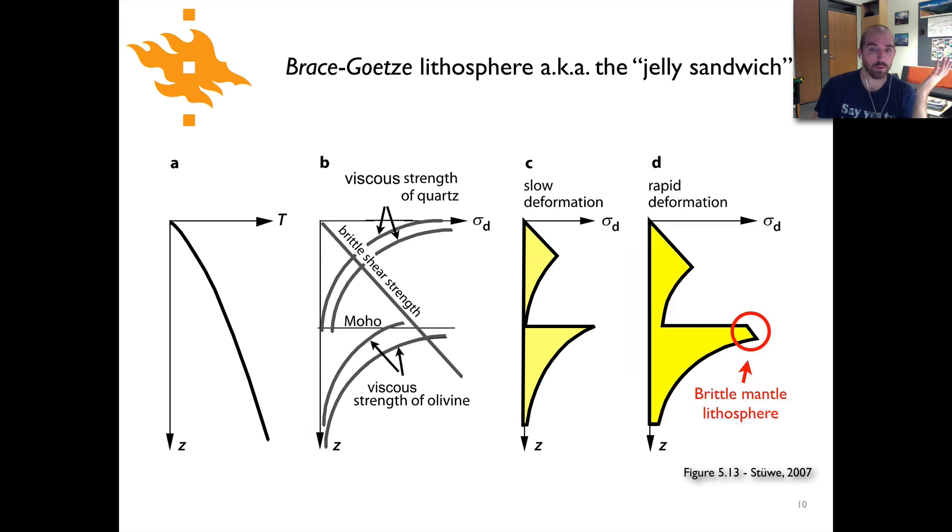Well how would it look different? The biggest difference in this case occurs here. When we go to the more rapid deformation what that means in effect is that the viscous strength will increase and so the transition from frictional or brittle deformation to ductile or viscous deformation will move to a slightly greater depth.